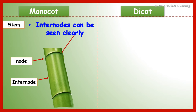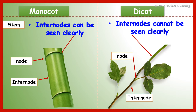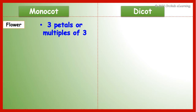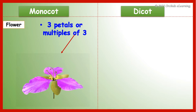In monocot plant stems, internodes can be seen clearly. In dicot plant stems, internodes cannot be seen clearly. Monocot plant flowers have 3 petals or multiples of 3 petals.